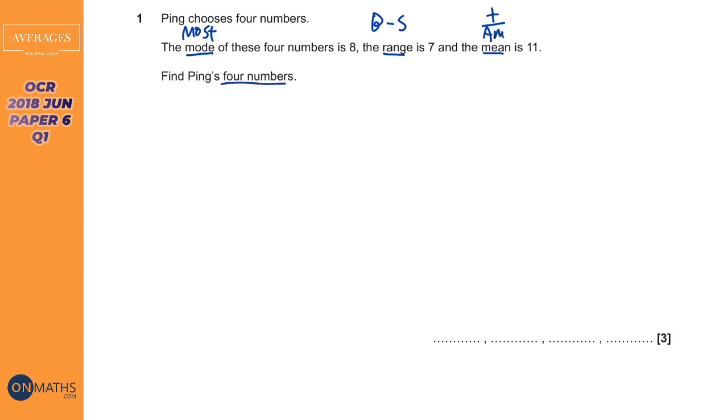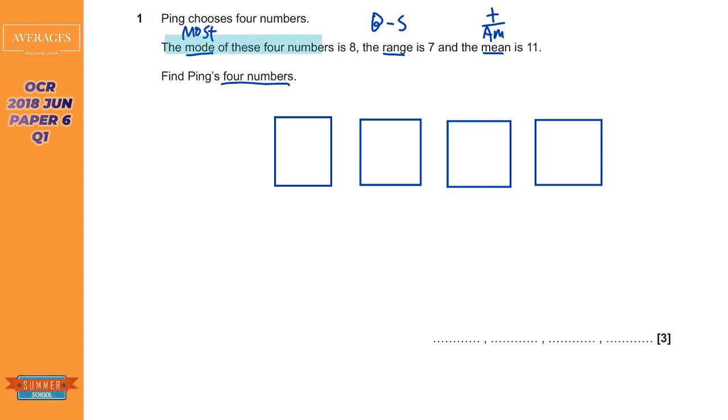Now it says we've got four numbers so I'm going to draw four little boxes for my numbers to go in. Okay now we've got to prioritize the information so we've been given a number of facts. The mode of the four numbers is eight, fact number one, the range is seven, fact number two and the mean is eleven. The fact there's four numbers is actually quite important because we'd be doing this all day if there were unlimited numbers.